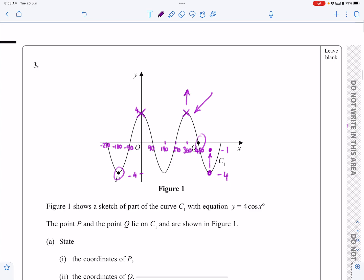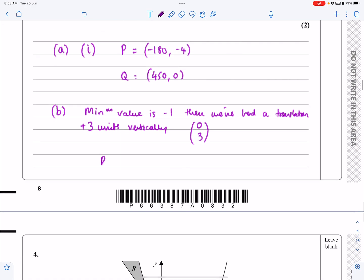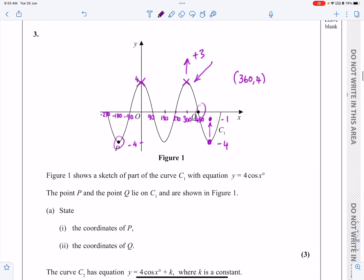So that one, what happens if I move this up 3 units is currently, this is the point 360, 4. So if I'm going to move it up 3 units, R is going to equal 360, 7. Okay, hopefully that all makes sense.